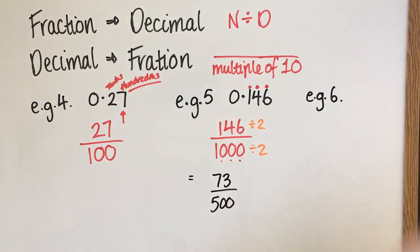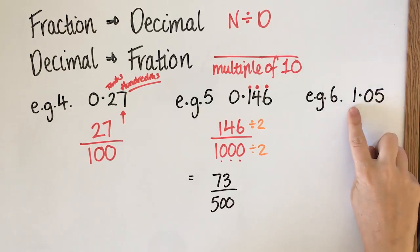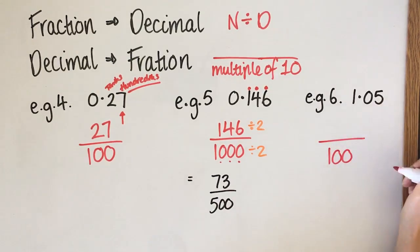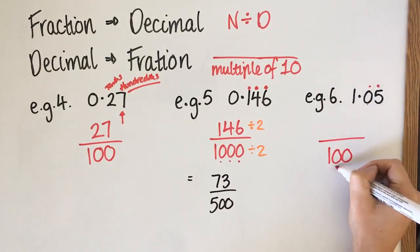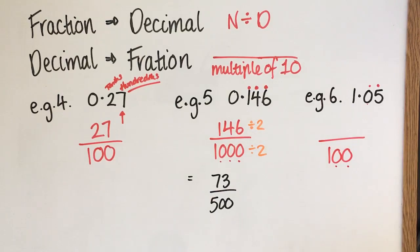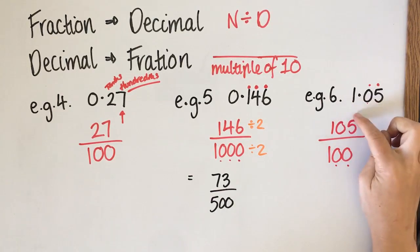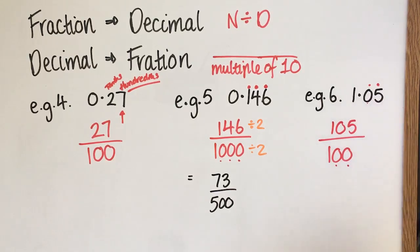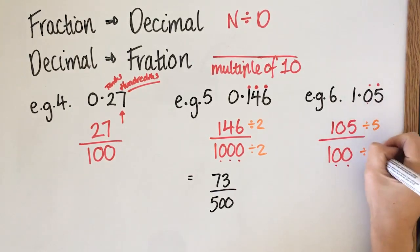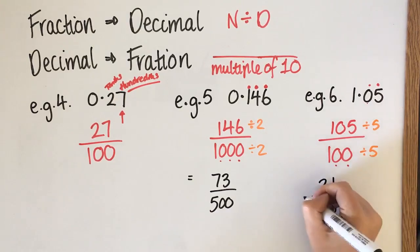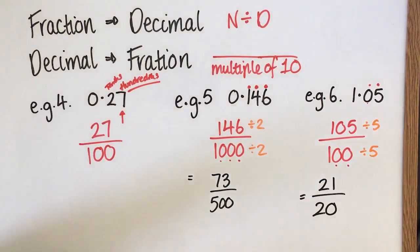The last example is 1.05. This has two decimal places so it goes over 100. It becomes 105 over 100. I know 5 goes into both: 5 goes into 105 twenty-one times, and 5 goes into 100 twenty times. So 1.05 as a fraction is 21 over 20.